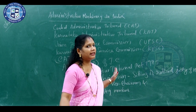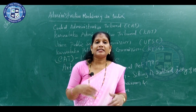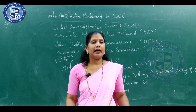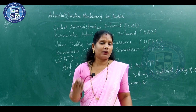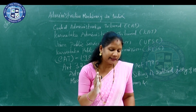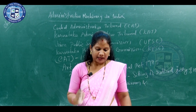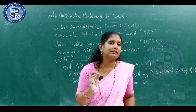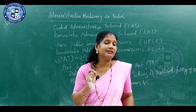All employees of the Central Administrative Tribunal discharge their duties under the guidance of the chairman. Their salaries, allowances, and conditions of service of the officers and employees are specified by the central government. The term of the chairman and members of the Central Administrative Tribunal is 5 years or 65 years of age.